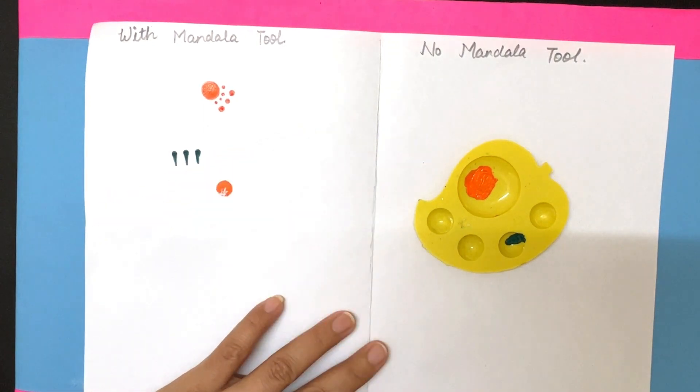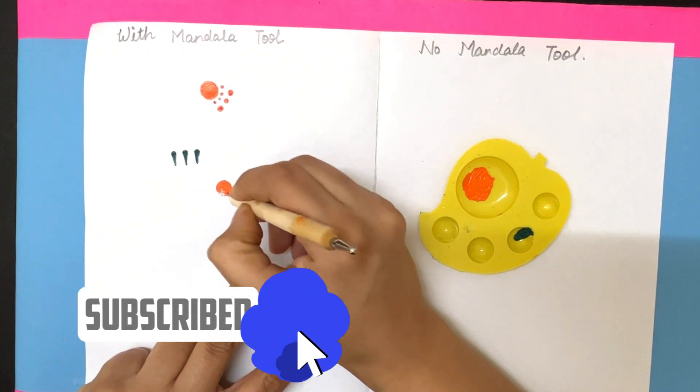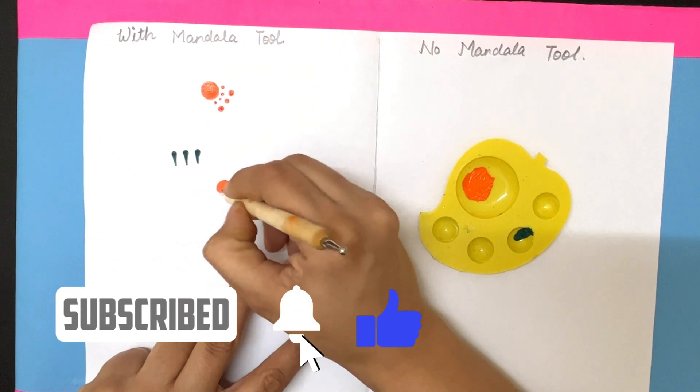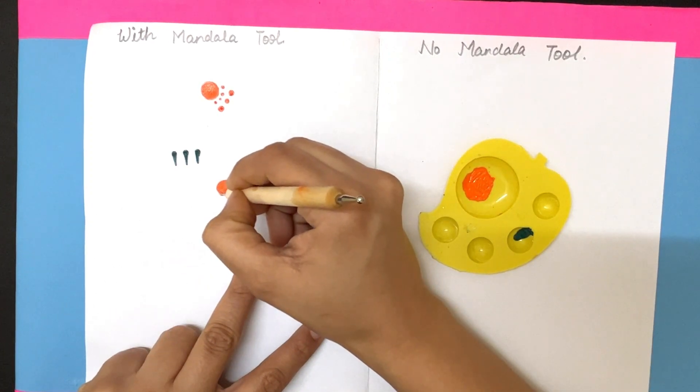Another important tip: if your dots aren't perfect, you need not worry. Just fill in the gaps by taking some color on a pointed tool or using a paint brush.